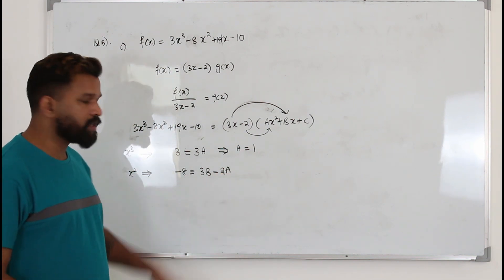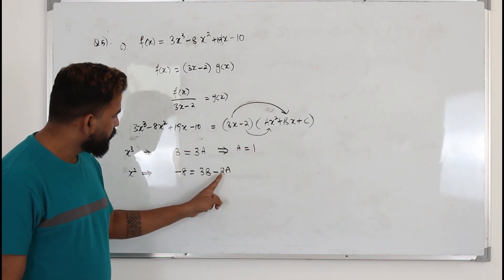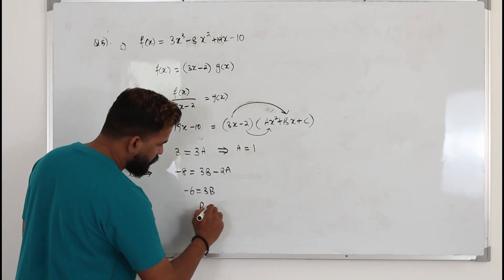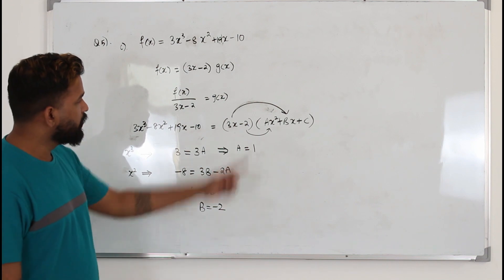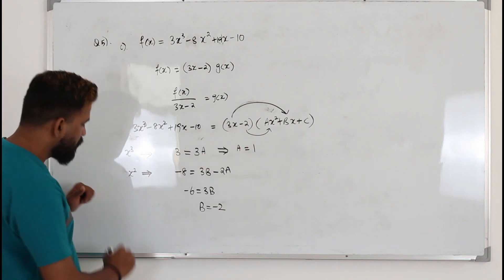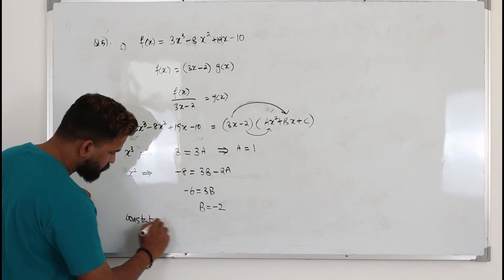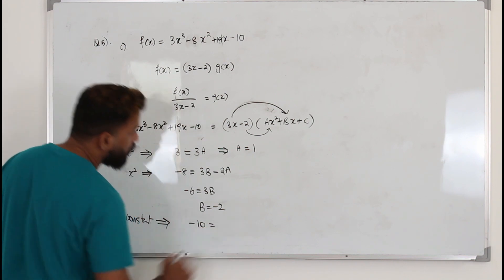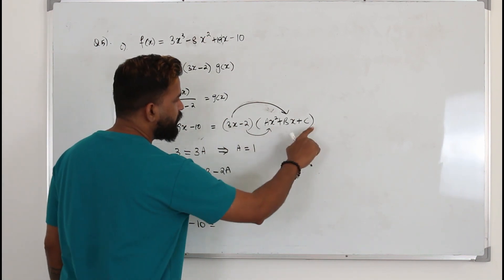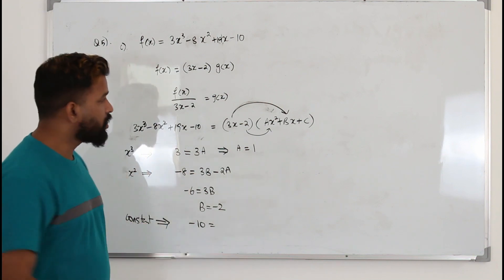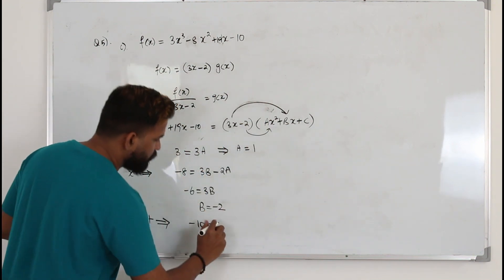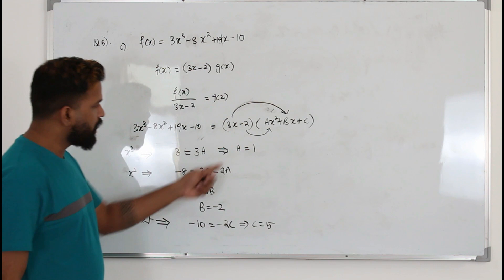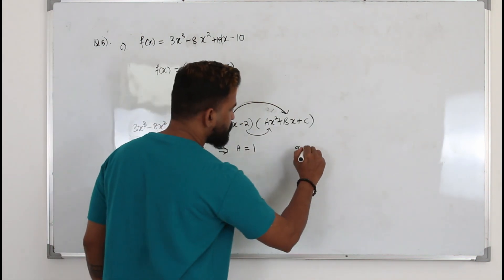Now compare the coefficient of x² on both sides: left side has -8. On the right, 3x·bx² gives 3b·x², and (-2)·ax² gives -2a·x². With a = 1: 3b - 2 = -8, so 3b = -6, giving b = -2. For the constant term: on the right, (-2)·c = -10, so c = 5. Therefore g(x) = x² - 2x + 5.